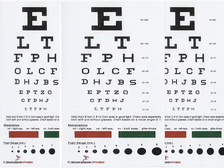Record the visual acuity for each eye by noting the line for which the patient correctly identified either more than half the letters on that line but not all of them, or all the letters on that line plus a few letters or less than half on the next line.